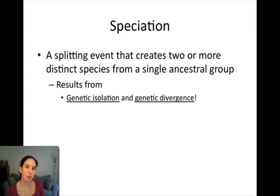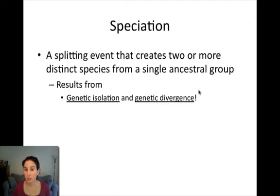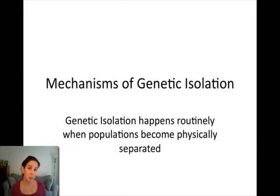Hello again. Now we're going to talk about mechanisms of speciation — that is, how does an ancestral population split into two separate populations and then how do those two separate populations become species? Speciation results from genetic isolation and also genetic divergence. There are lots of mechanisms for genetic isolation. Genetic isolation happens pretty routinely when populations become physically separated, so we're going to talk first about how populations of organisms become physically separated and therefore genetically isolated.